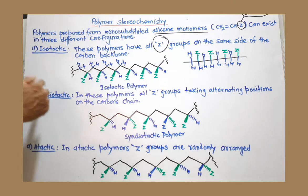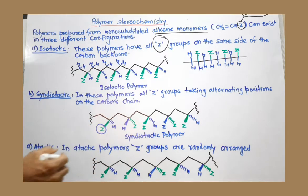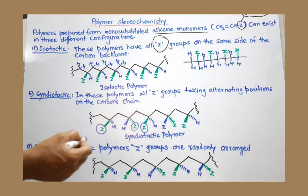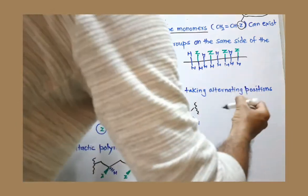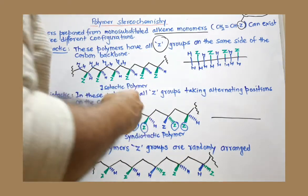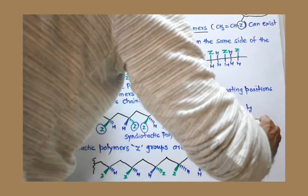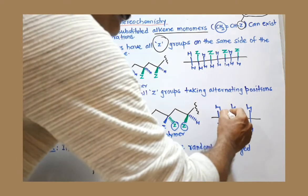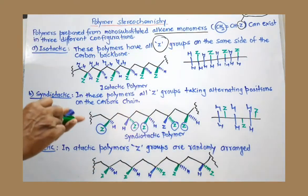In the syndiotactic stereoisomer, Z takes alternating positions. At one carbon Z is above the plane, and at the next carbon Z is below the plane, then back above the plane, and so on — alternating above and below. To represent this with a line structure, you draw the carbon chain on the plane, show alternate CH2 carbons, and then draw Z alternating above and below.